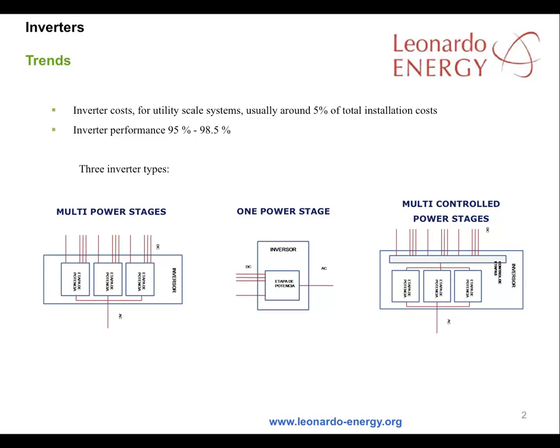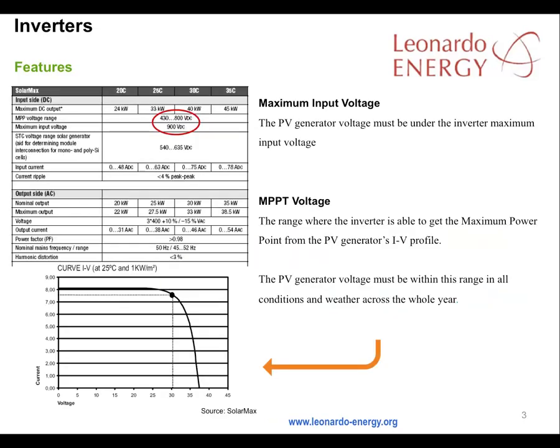The electricity company that your solar plant supplies will be concerned about the potential effect of your solar plant on its network. They may ask for galvanic isolation transformers where the connection is low voltage. The main issues to consider when selecting the inverter include the maximum input voltage — that's the voltage of the PV generator — which must always be below the inverter's maximum input voltage.